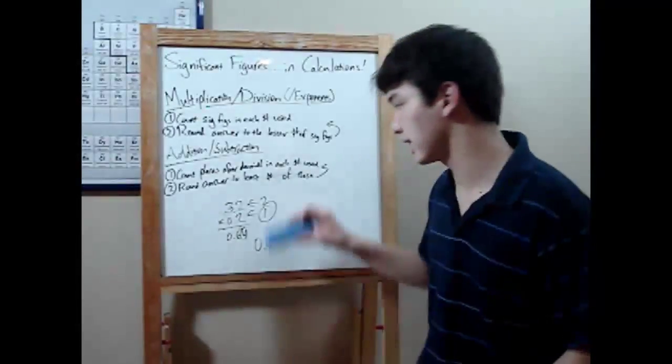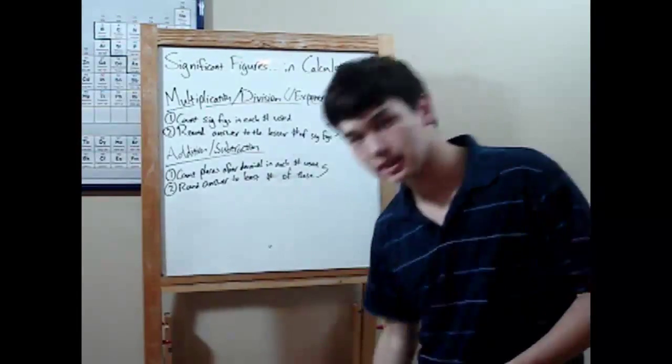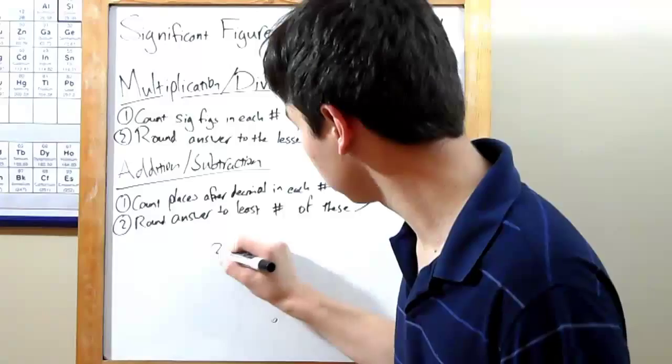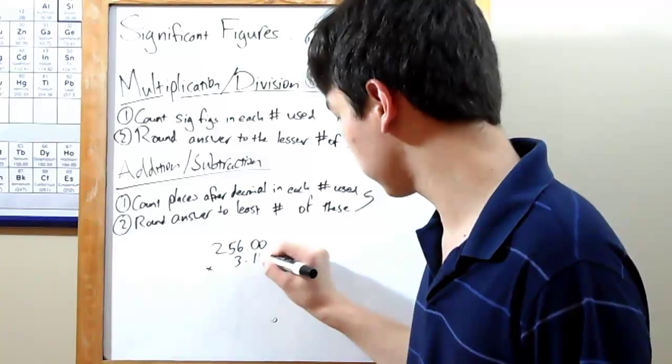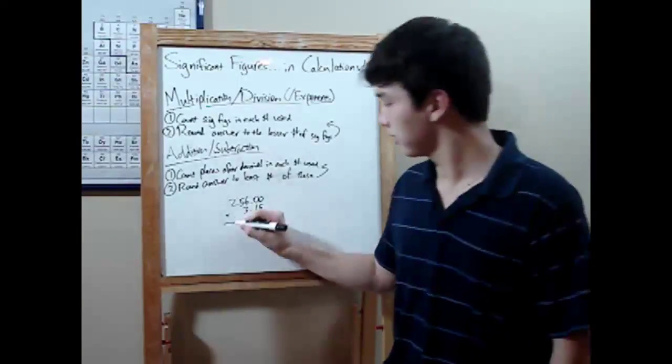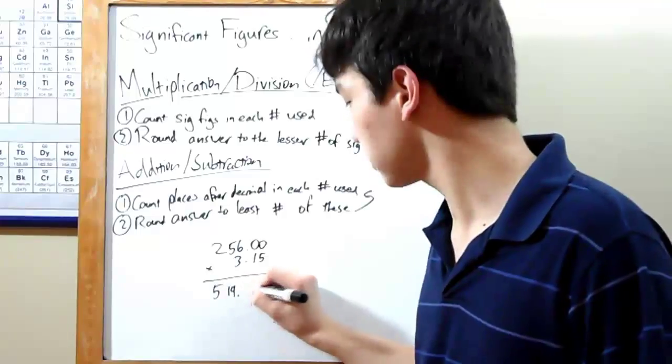Okay, something a bit bigger than that. Let's say you've got some gruesome numbers, like 256.00 times 3.15. Multiplying through will give you 519.68.